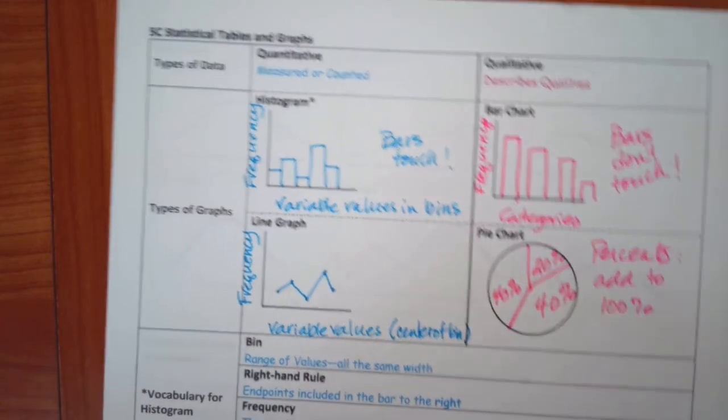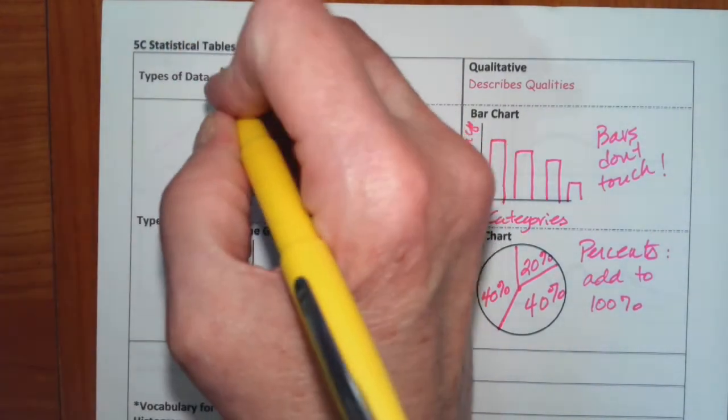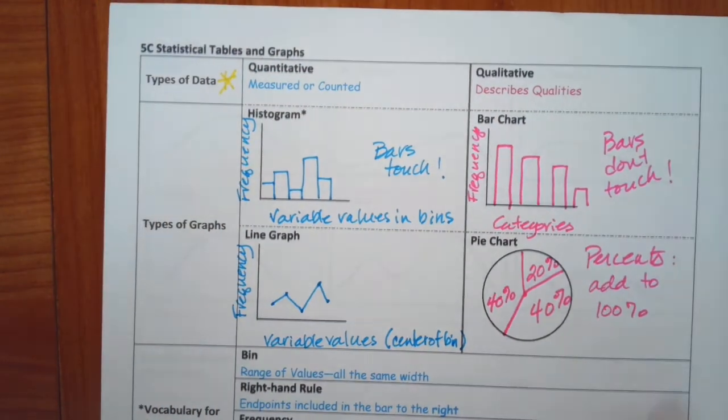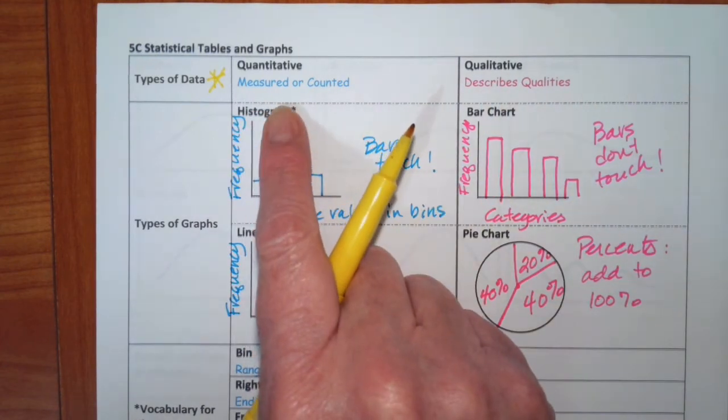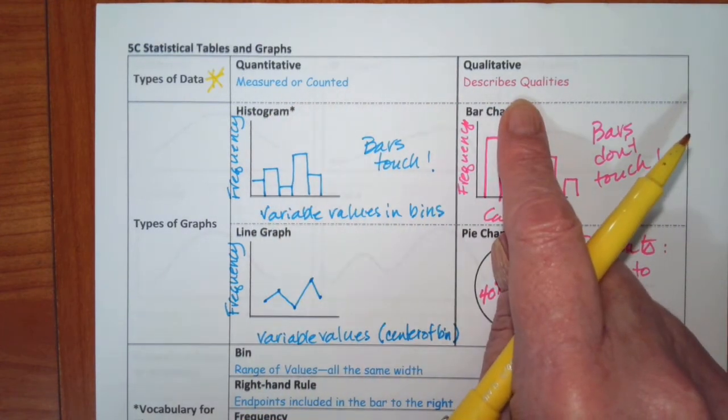5C went in to talk about statistical graphs and tables. And this was split into the types of data. And this is really important. Is it quantitative or qualitative? Quantitative is measured or counted, where your data is going to be numbers. Qualitative describes qualities. So we're looking at categories.